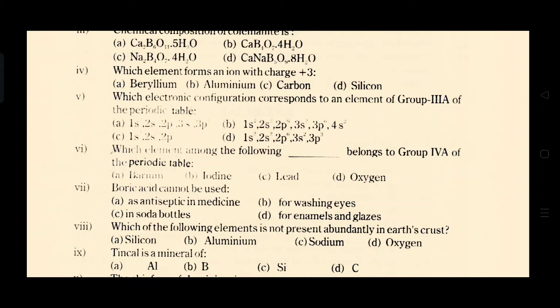Now the number 6 is which element among the following belongs to group 4A of the periodic table? That element is lead because lead belongs to group 4A.